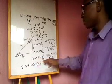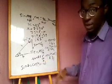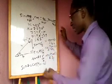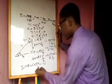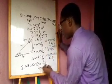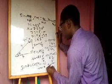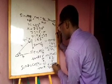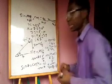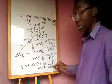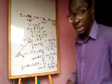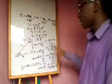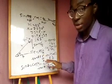Additionally, tangent theta is c over b and tangent of (90 minus theta) is b over c, so they are multiplicative inverses of each other. That means tangent theta equals one over tangent of (90 minus theta), which is also written as cot of (90 minus theta). So tangent theta equals cot of (90 minus theta). These are the relationships between angles and their complementary angles in trigonometry.